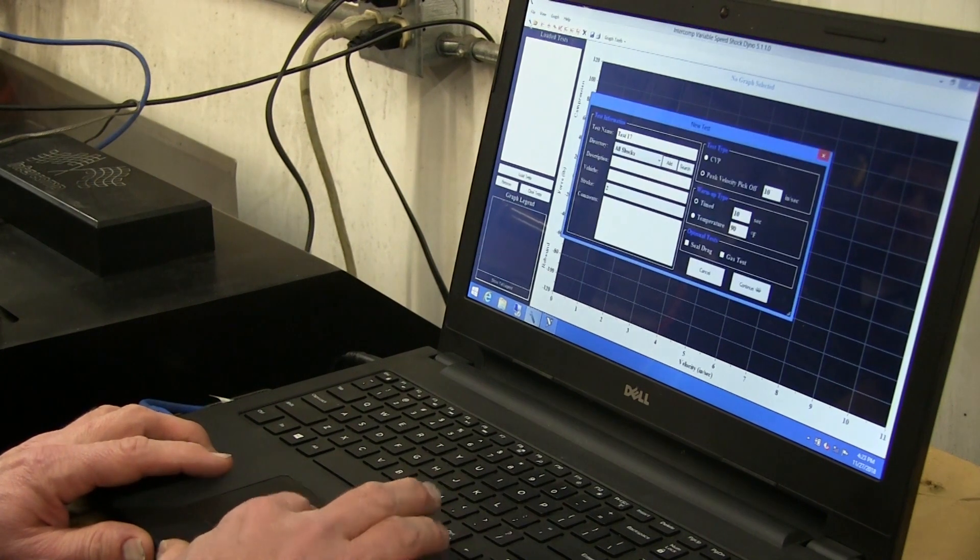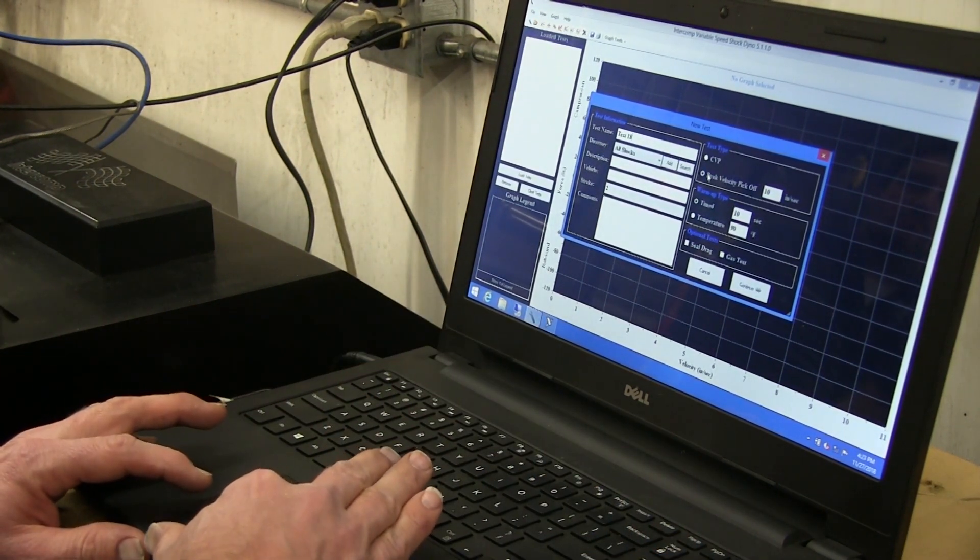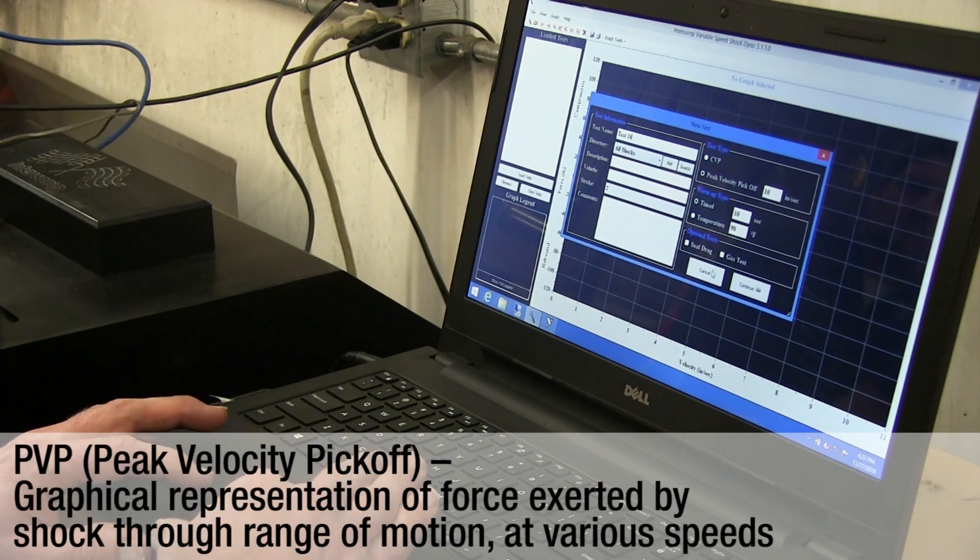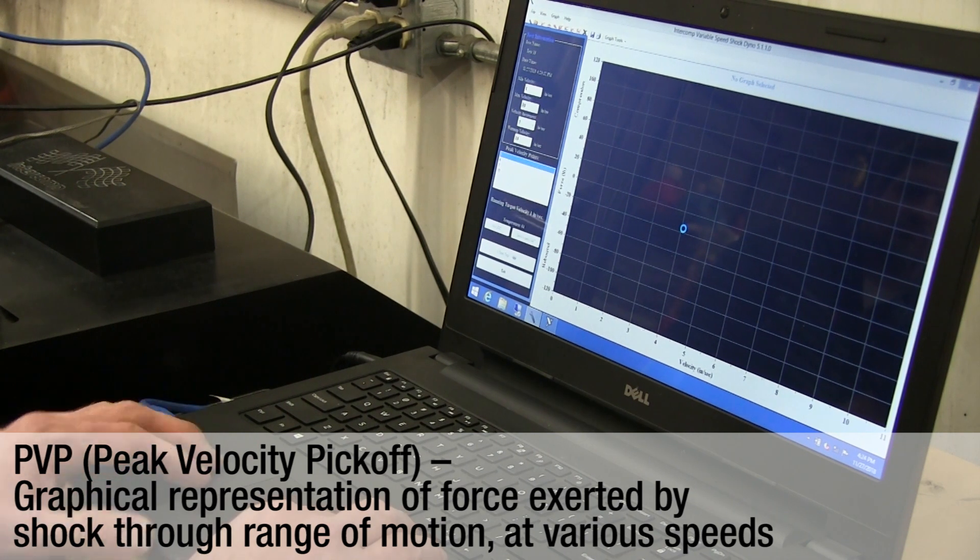I'm going to click on new shock test, name it, click on PVP and use the timed warm-up cycle. You're going to notice the shock is going to be run at a number of different velocities where we're going to pick up data on it at those velocities so we can look at a differentiation.